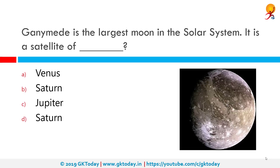Ganymede is the largest moon in the solar system and is a satellite of the planet Jupiter. It is the largest and most massive of the solar system's moons and the ninth largest object in the solar system. It is also the largest object without a substantial atmosphere.